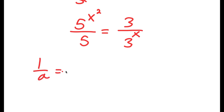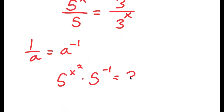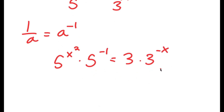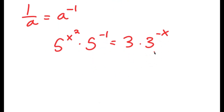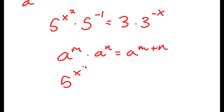Now, if I have something in the form 1 over a, this is the same thing as a to the power of negative 1. So 5 to the power of x squared over 5 is the same thing as 5 to the power of x squared times 5 to the power of negative 1, and this equals 3 times 3 to the power of negative x. Using the rule a^m · a^n = a^(m+n), I get 5 to the power of x squared minus 1, equal to 3 to the power of 1 minus x.